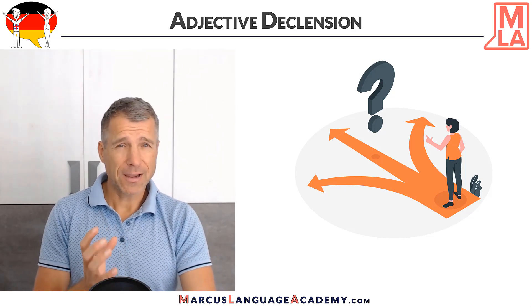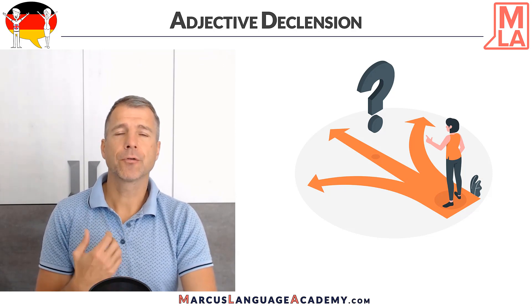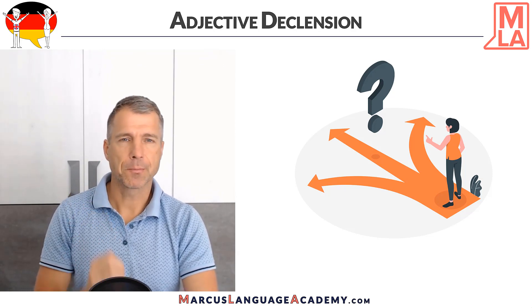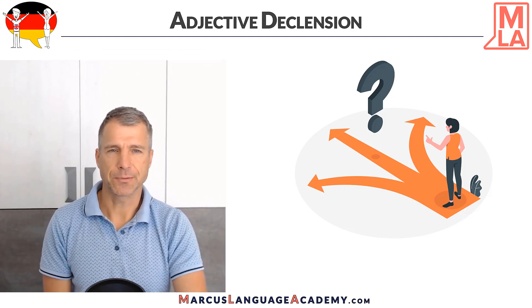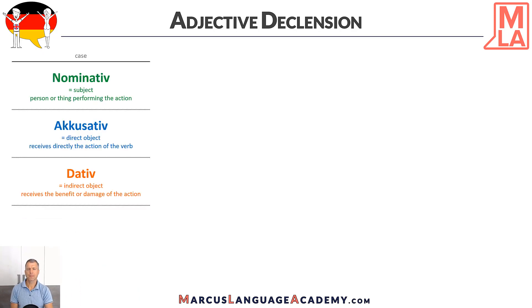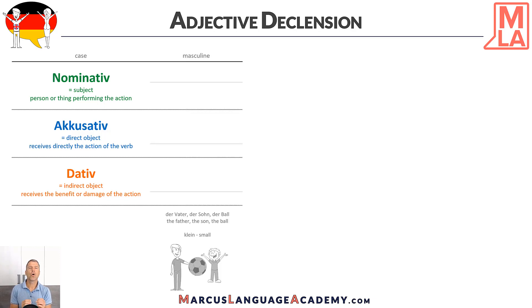I get quite a lot of questions from my students, so let's explain it step by step. Remember, in German we use cases: nominative, accusative, and dative. And we also depend on the gender of the noun.